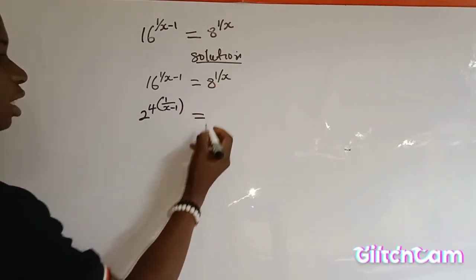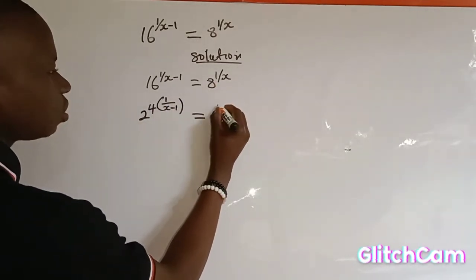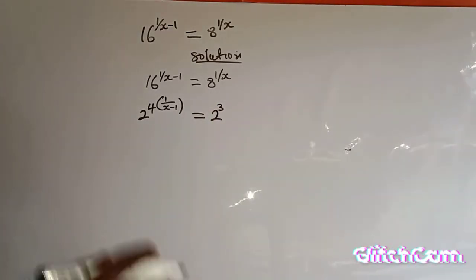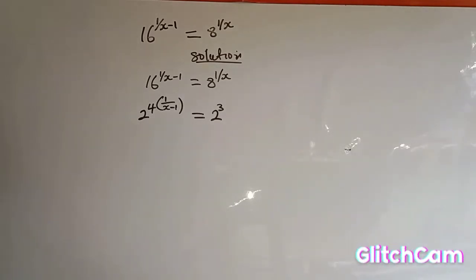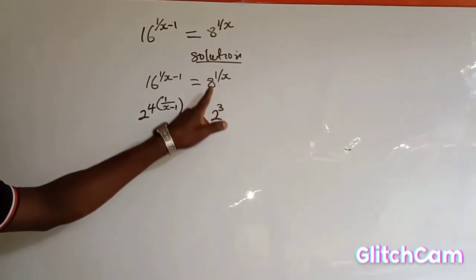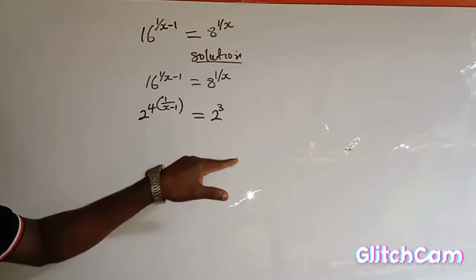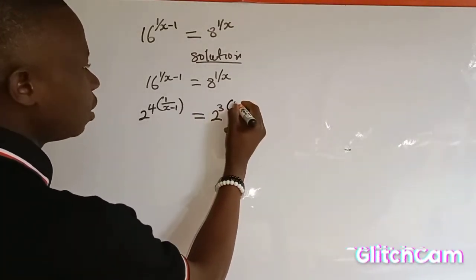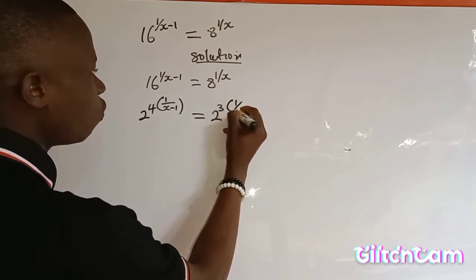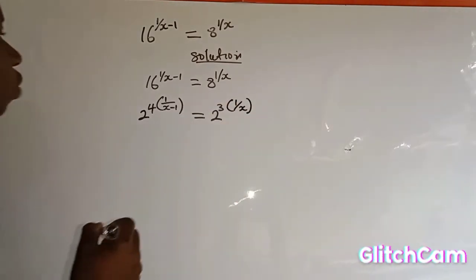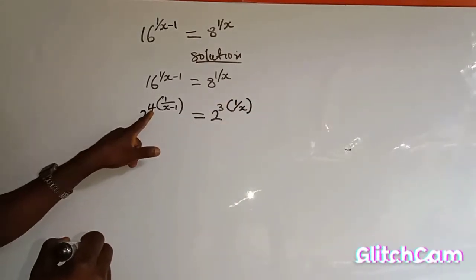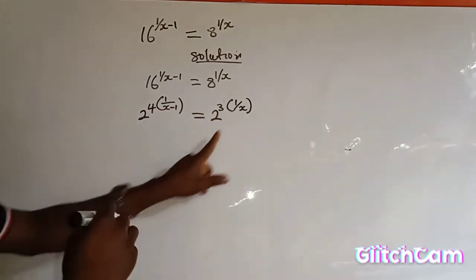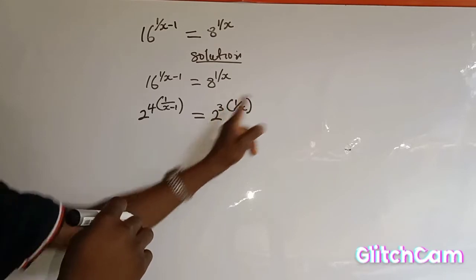This side can also be written as 2 to the power of 3, because 2 multiplied by 2 is 4, and 4 multiplied by 2 is 8. So 8 is 2 to the power of 3, into the bracket of the main power which is 1 over s. Now I can use the 4 to open this bracket and also use the 3 as a power to open this bracket.